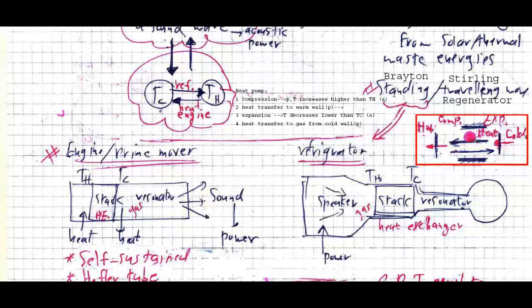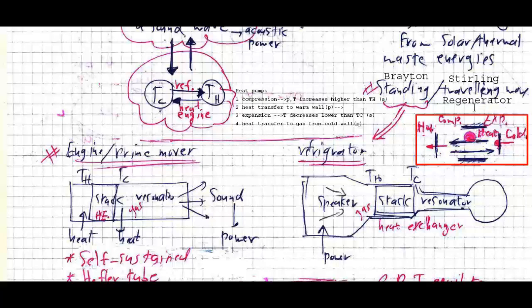The other version, for traveling waves, uses the Stirling cycle to generate power. Instead of a stack, that version of the device contains a regenerator.